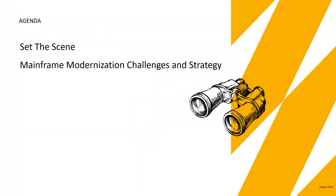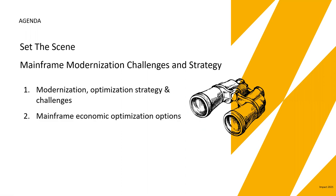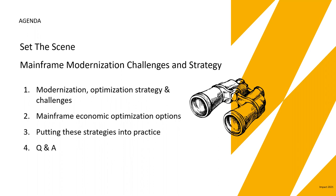My agenda for today: I'm going to talk about mainframe modernization — challenges, strategies, optimization, and economics. How can we get more out of the mainframe? What is the cost? We need to think about analytics, reduced costs, and resources — all of these need to be continually improved. I'll also cover some ways to put these strategies into place. Q&A will be at the very end, but please jot your questions down and ask them or send them through the chat.